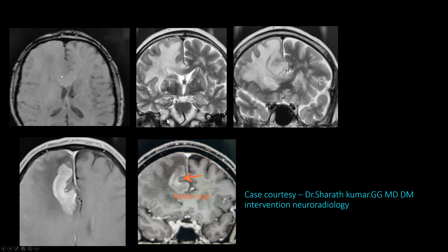Next case: the patient presented with fever, altered sensorium, and seizures. You can see a hyperintense area in the frontal lobe extending along the corpus callosum, with significant perilingual vasogenic edema. There is also a curvilinear hyperintense area with a central hypointense deep notch-like appearance. On IV contrast, there is peripheral heterogeneous enhancement with a central hypo-enhancing deep depression.